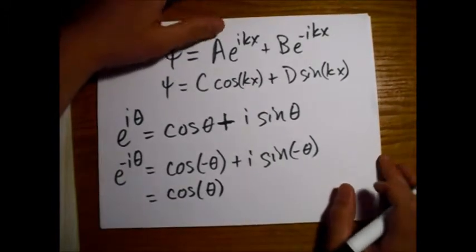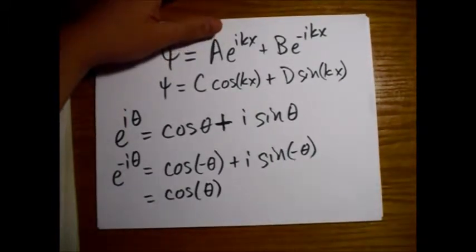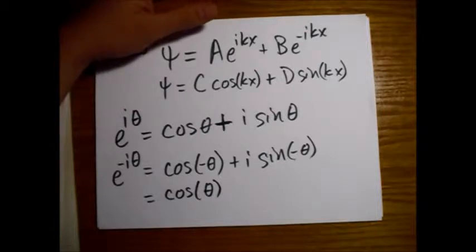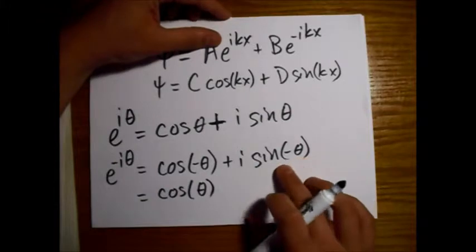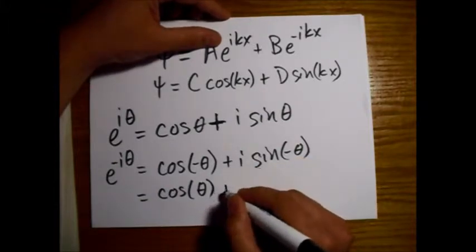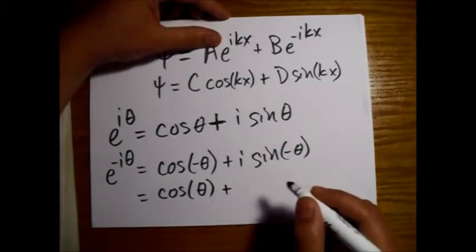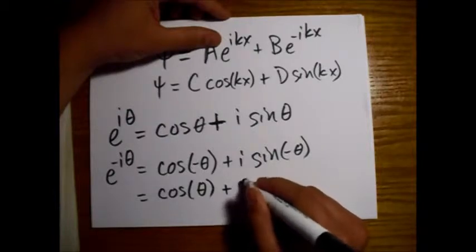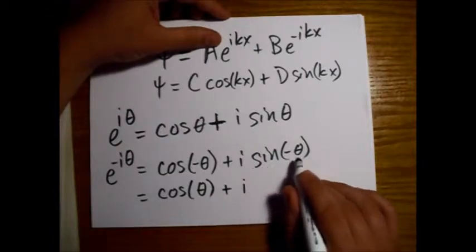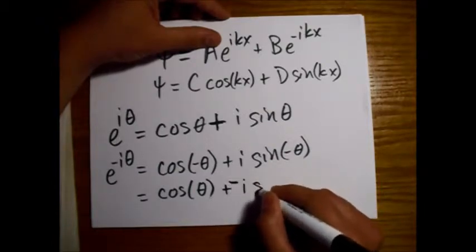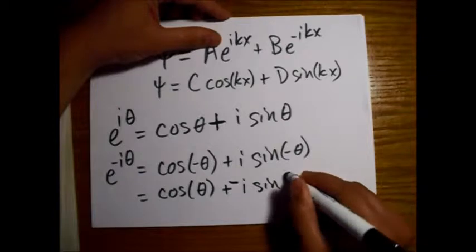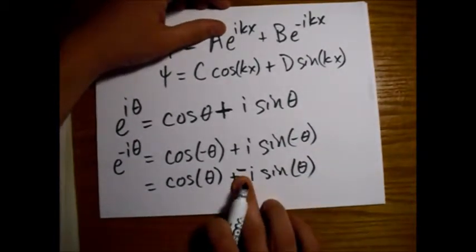Sine is the opposite case. If you go out to some angle, you'll get the negative of what you would get if you went out to the negative of the angle. So basically, sine of negative theta is minus sine of theta. So there's a minus sign here.